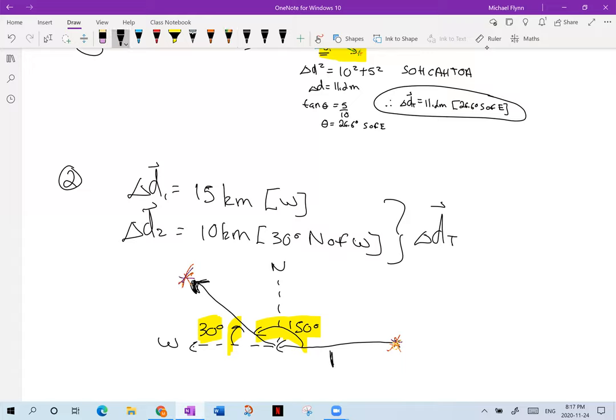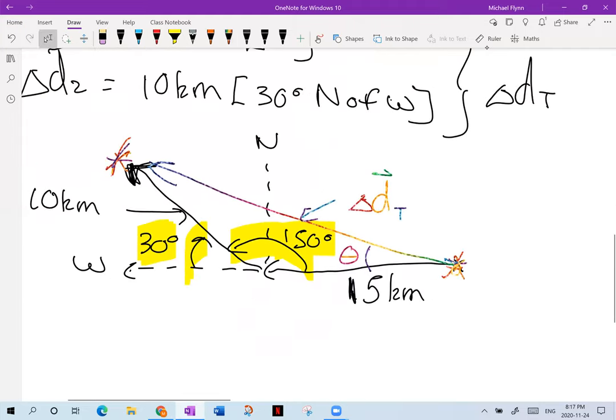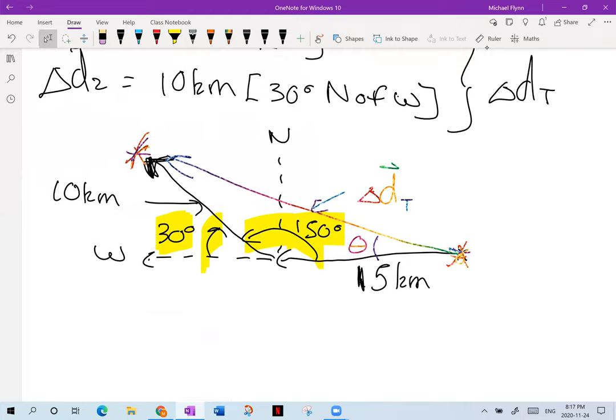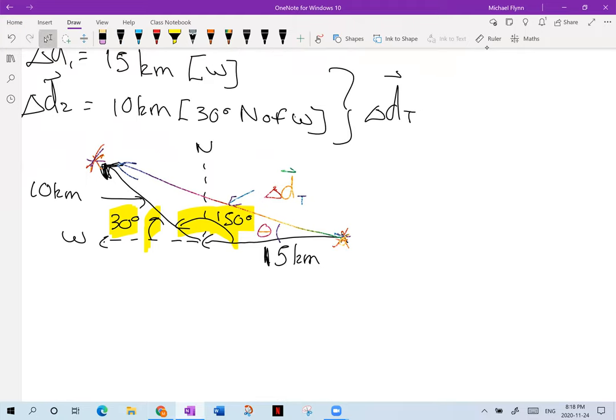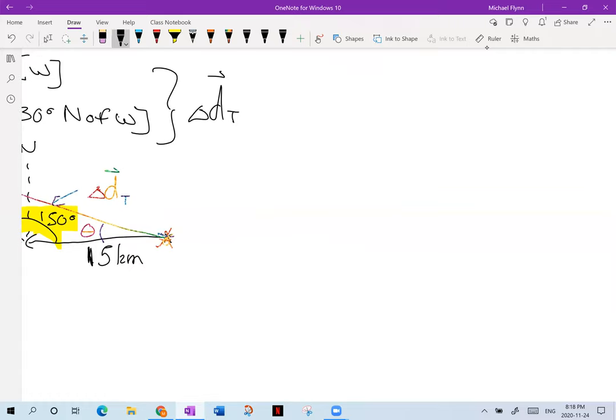Now, the rainbow line, the sort of the magic total displacement line, we start, our man started here. He ended here. So therefore his total displacement. Oh, by the way, I should number the sides here. This side is 15 kilometers. And this side over here is 10 kilometers, as the question tells us. And so our resultant displacement is going to be like this. And so that is your displacement delta D, the total displacement. And how are we going to find this guy? Well, we're going to need to find the side and the angle. So we need the size of the vector and the direction of the vector.